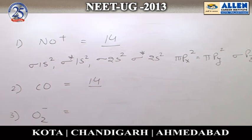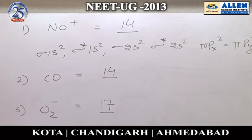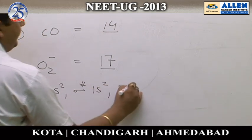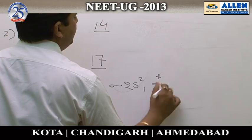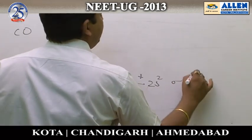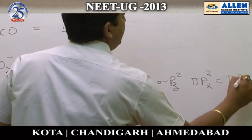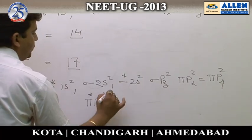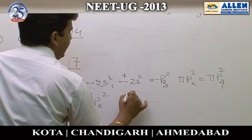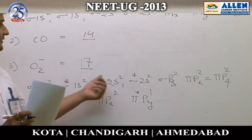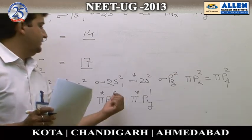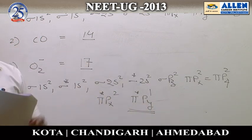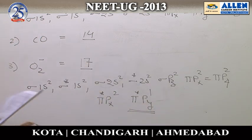For O₂⁻, the total number of electrons is 17. The molecular orbital configuration is: σ1s² σ*1s² σ2s² σ*2s² σ2pz² π2px² π2py² π*2px² π*2py¹. Total: 2+2+2+2+2+2+2+2+1 = 17. There is one unpaired electron in the π*2py orbital, so this species is paramagnetic.